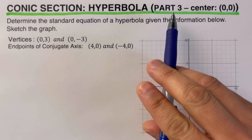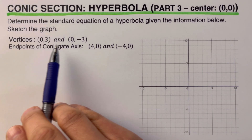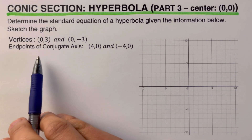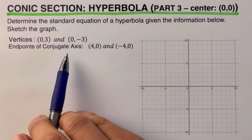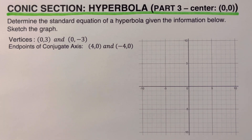In this part, we're supposed to determine the standard equation of a hyperbola given the coordinates of the two vertices and the endpoints of the conjugate axis. Before we move further, please feel free to check out the description box below for the link to the other series of topics related to hyperbola with center at (0, 0).